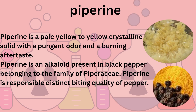Piperine is a pale yellow to yellow crystalline solid with a pungent odor and a burning aftertaste. It is slightly irritating to the skin and eyes. Piperine is structurally related to capsaicin, the chemical responsible for making chili peppers hot. It is an alkaloid present in black pepper belonging to the family Piperaceae, and is responsible for the distinct biting quality of pepper.